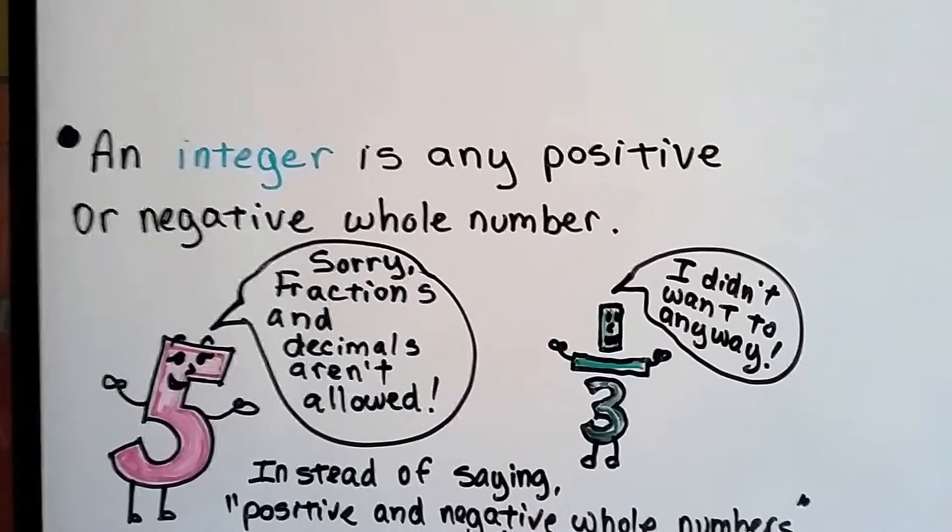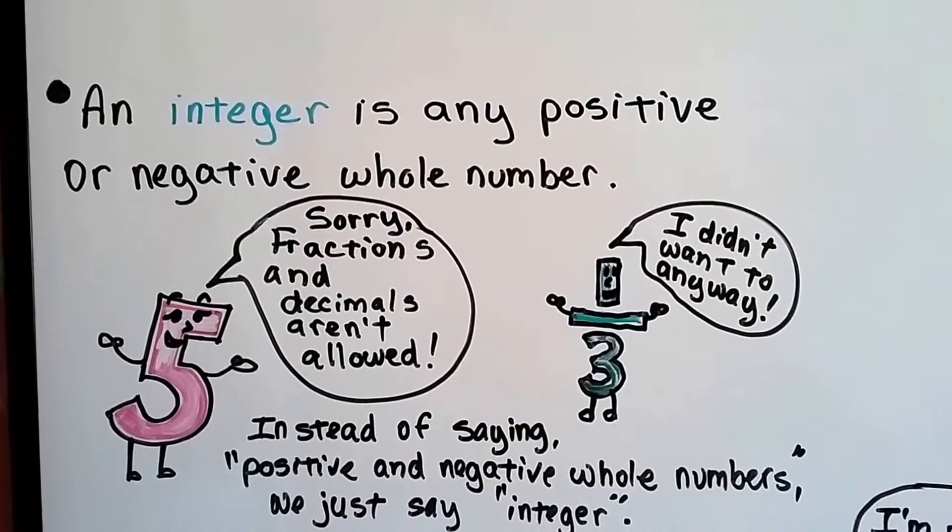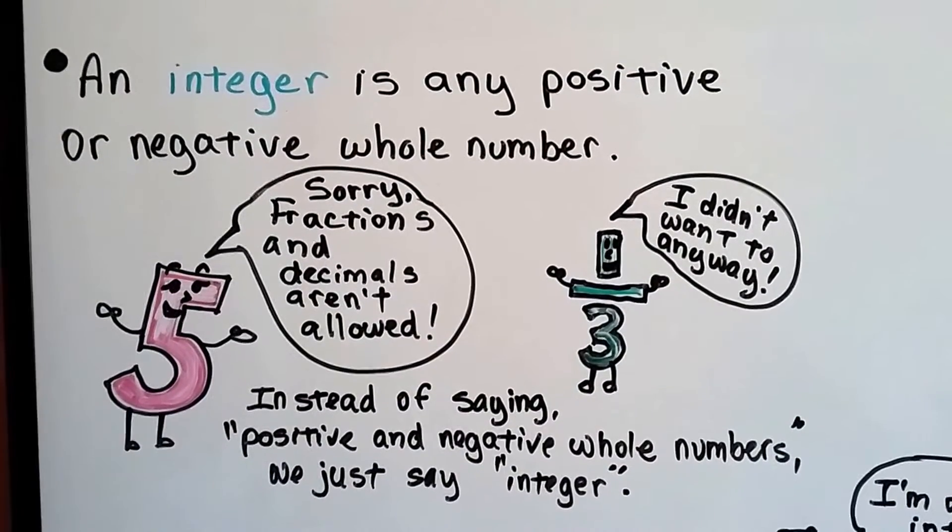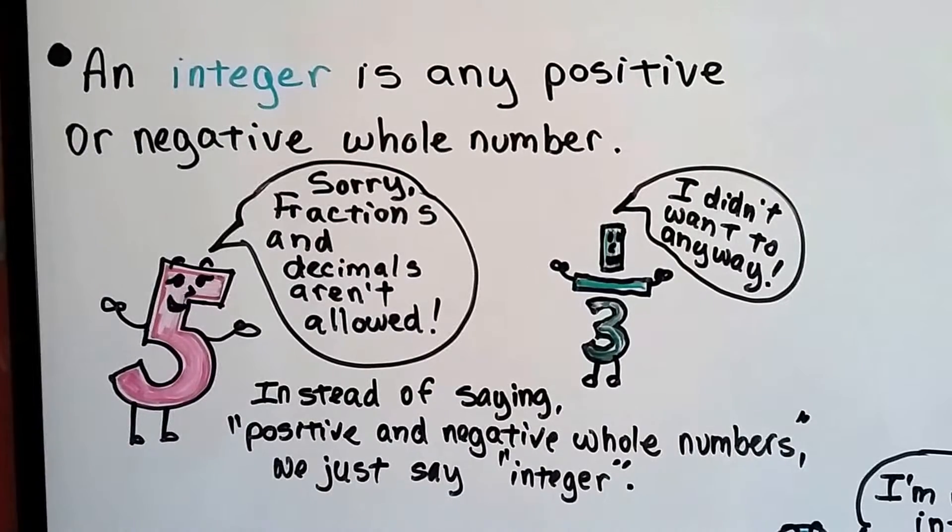An integer is any positive or negative whole number. Instead of saying positive and negative whole numbers, that's a mouthful, that's five words, we just say integer, one word.